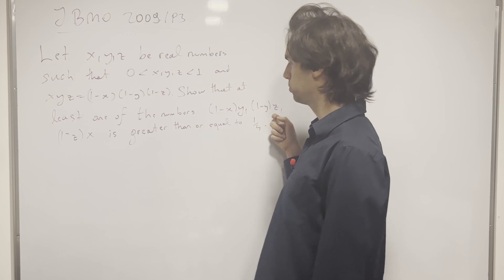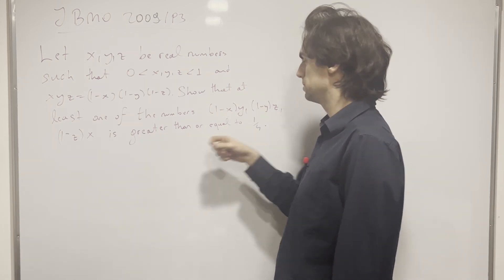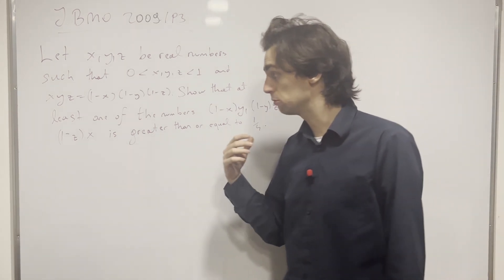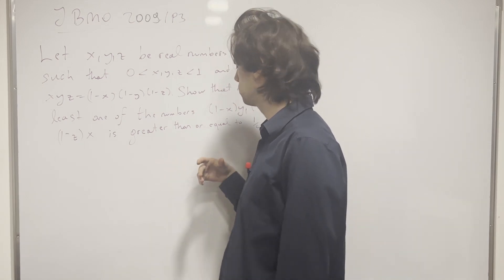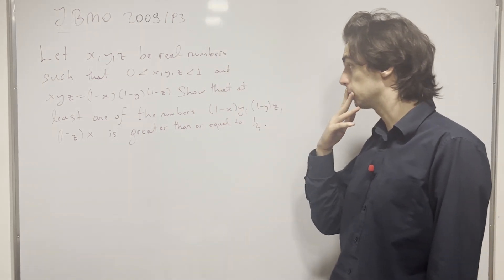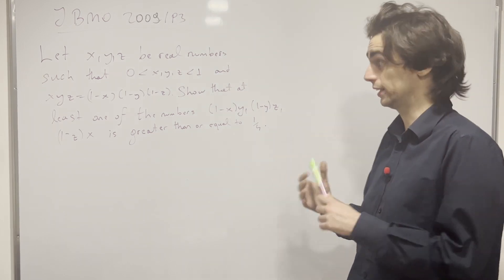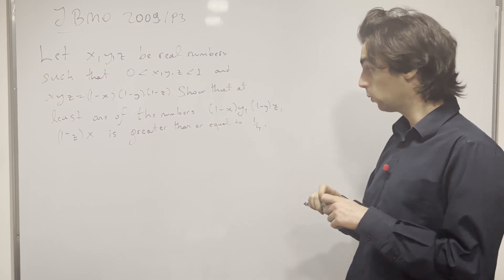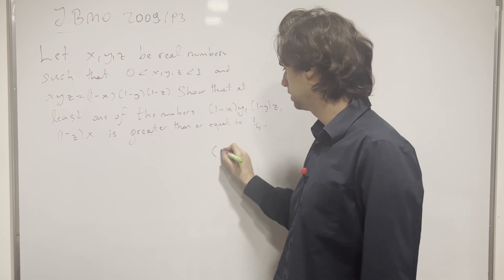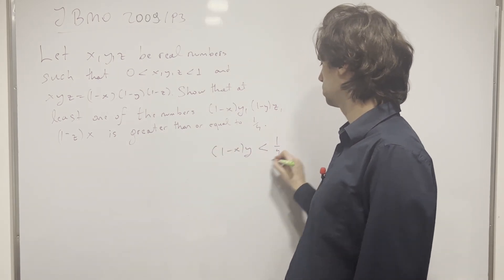So it's either this needs to hold true, but it's also, we can also say like 1 minus x times z, 1 minus y times x, and then 1 minus z times y, one of those also needs to be greater than or equal to a fourth. So how do we even begin this problem, right? As I said before, it's a non-technical problem. Well, one way to go about this is to say, okay, let's see what happens when I assume that all of them are in fact smaller than 1 over 4.